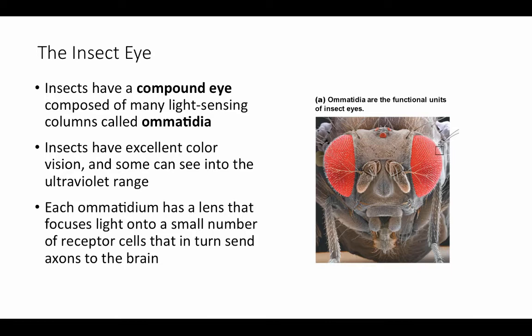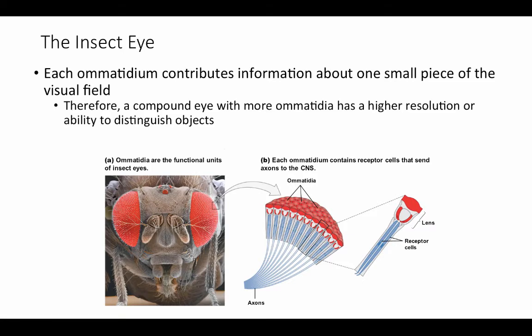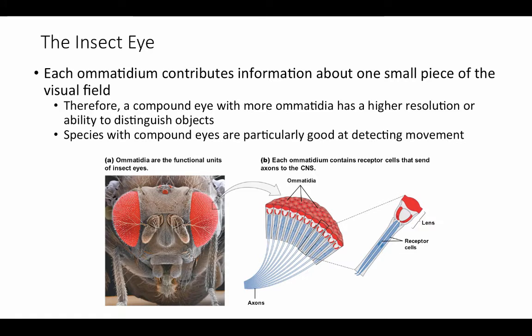Each lens focuses light and those receptor cells send axons into the brain to communicate the signal. Each ommetidium contributes information about one small piece of the visual field — you can think of this as being like a single pixel on your computer screen. Therefore, a compound eye with more ommetidia has a higher resolution or ability to distinguish objects: the more pixels you have on your screen, the better you can distinguish fine details. Species with compound eyes are also particularly good at detecting movement.